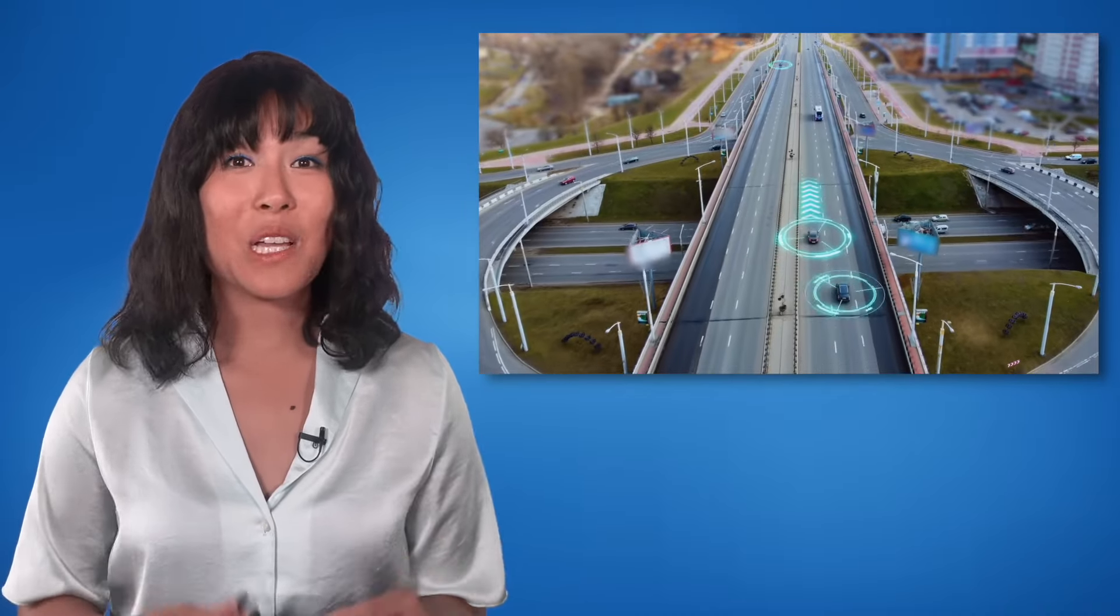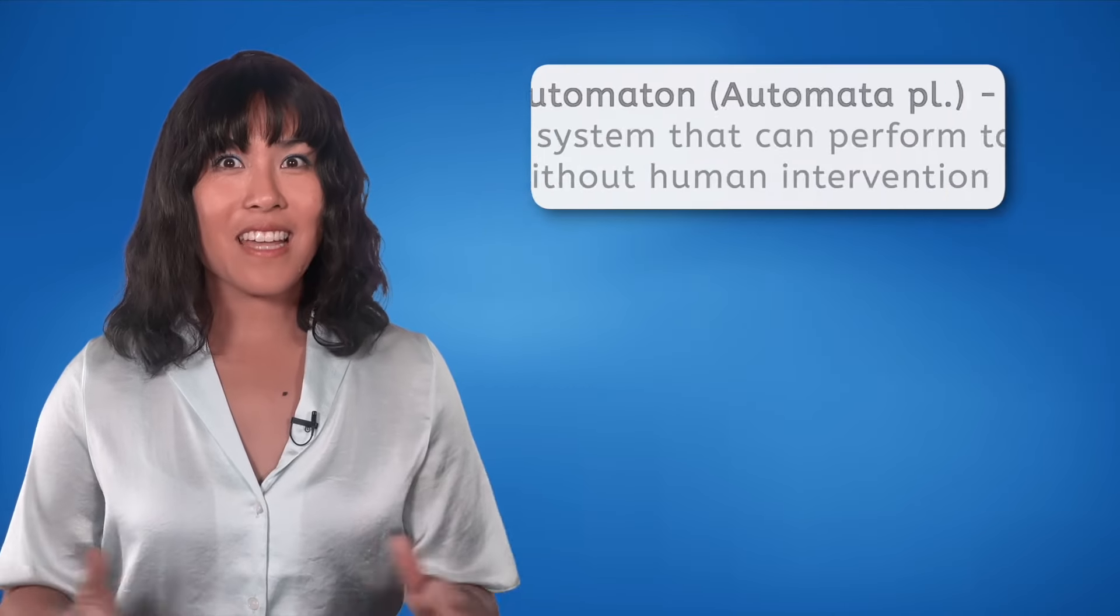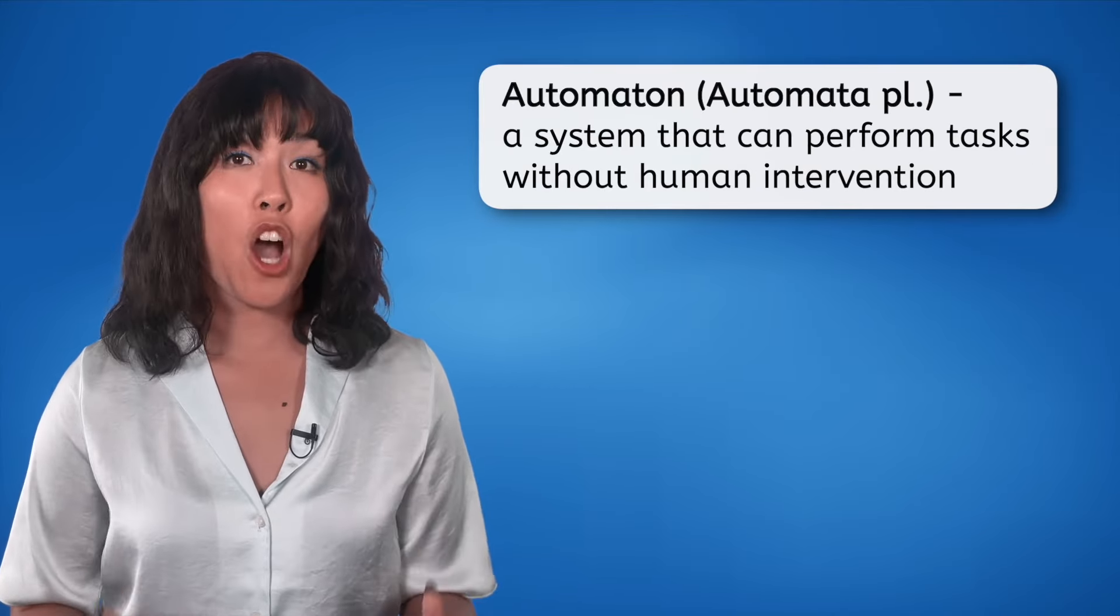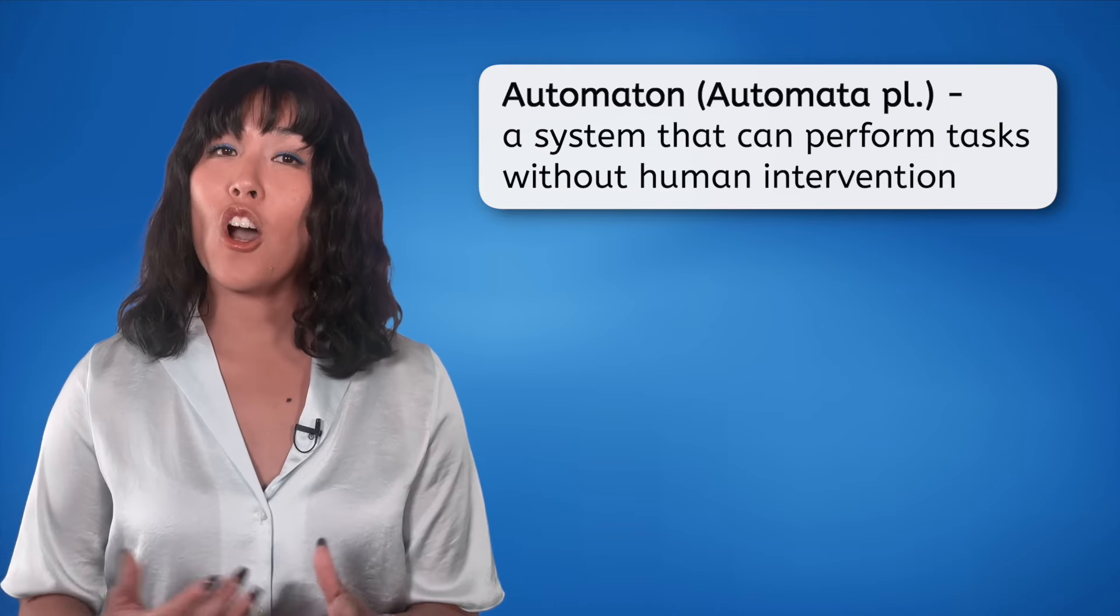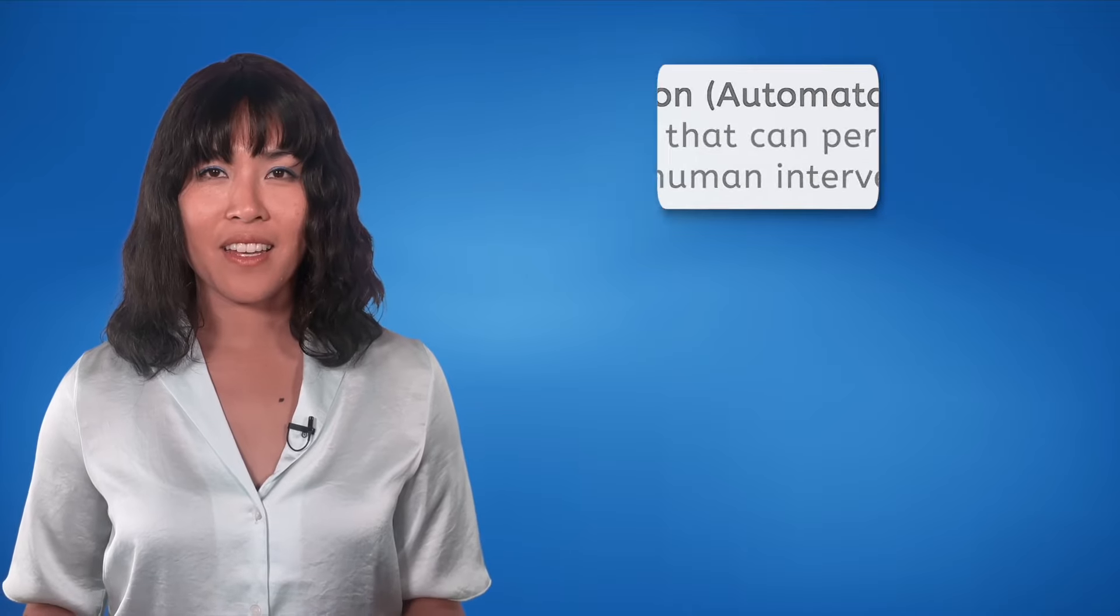Robots are everywhere! They are used on assembly lines, they're helping to create self-driving cars, and they're even used in space exploration. Another name for a self-operating robot is an automaton, and the plural is automata. An automaton is a system that can perform tasks without human intervention. Think of it like setting a clock. Once you wind it up, it ticks away on its own. Modern robots operate on a similar principle, but with advanced technology.